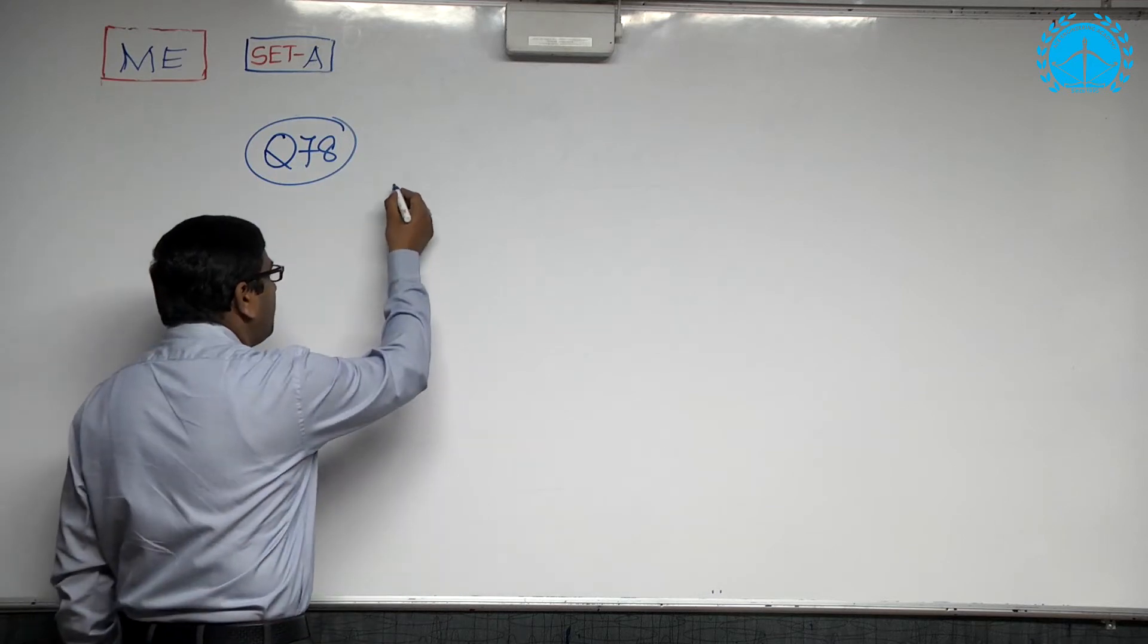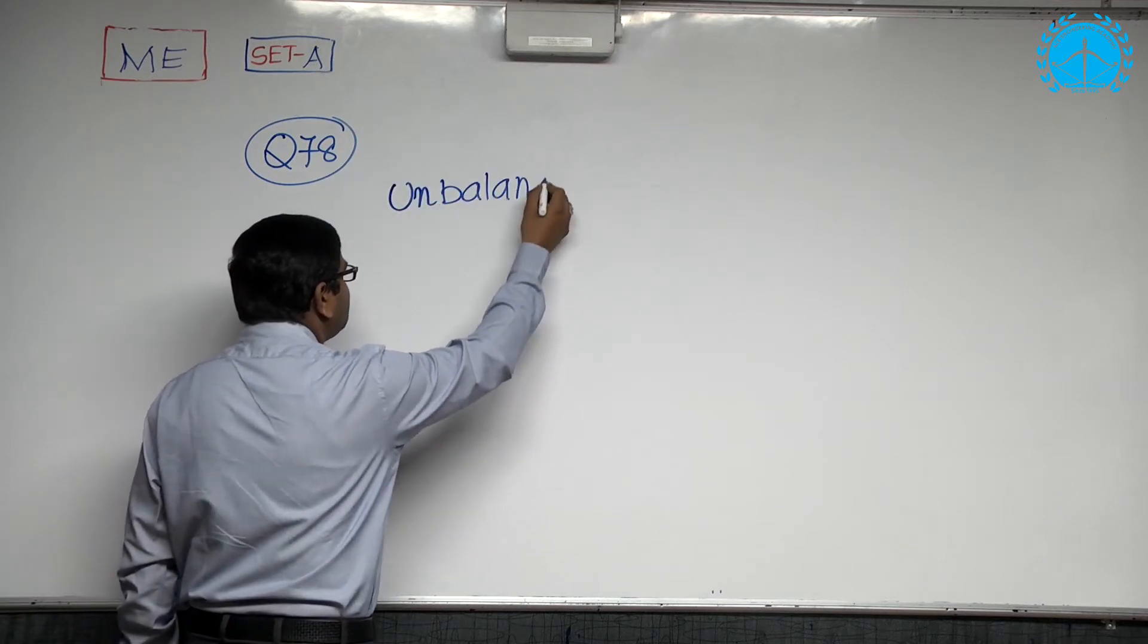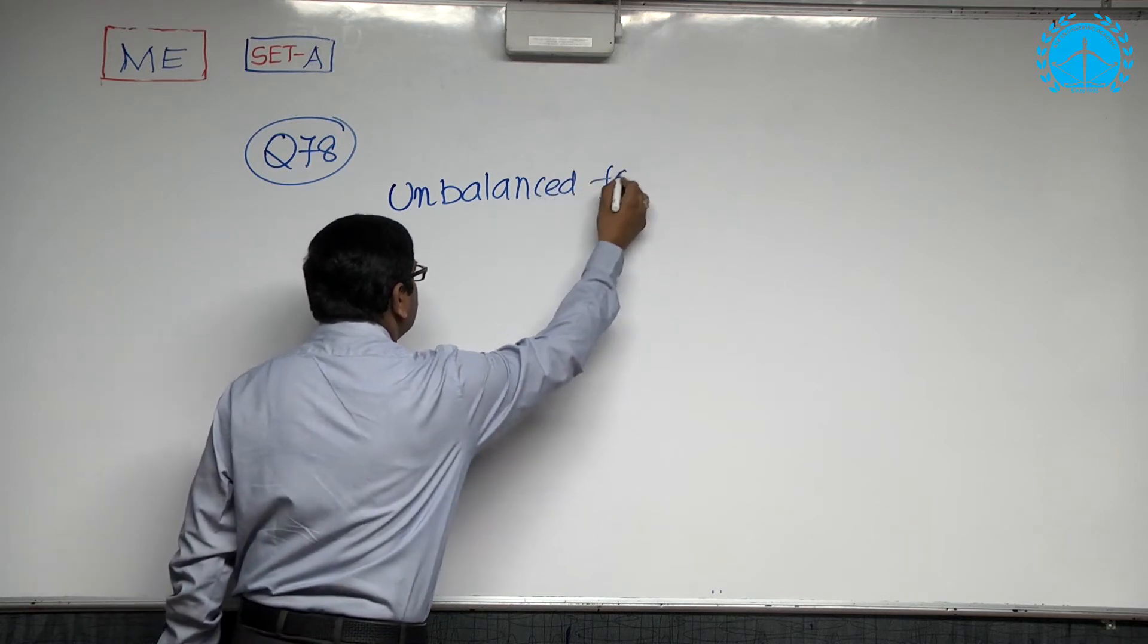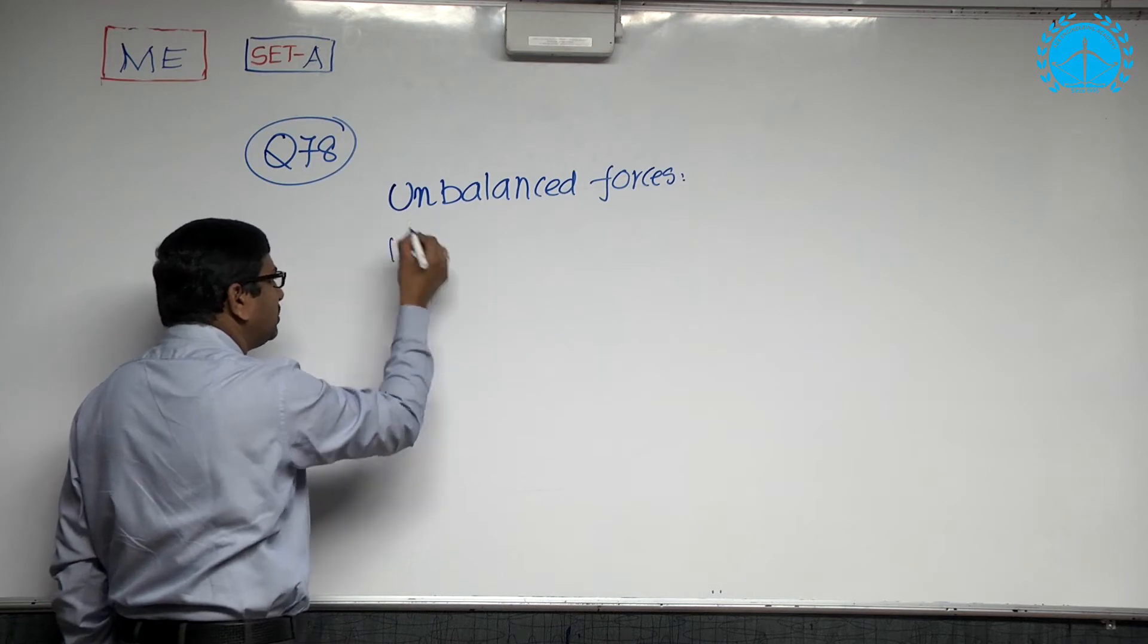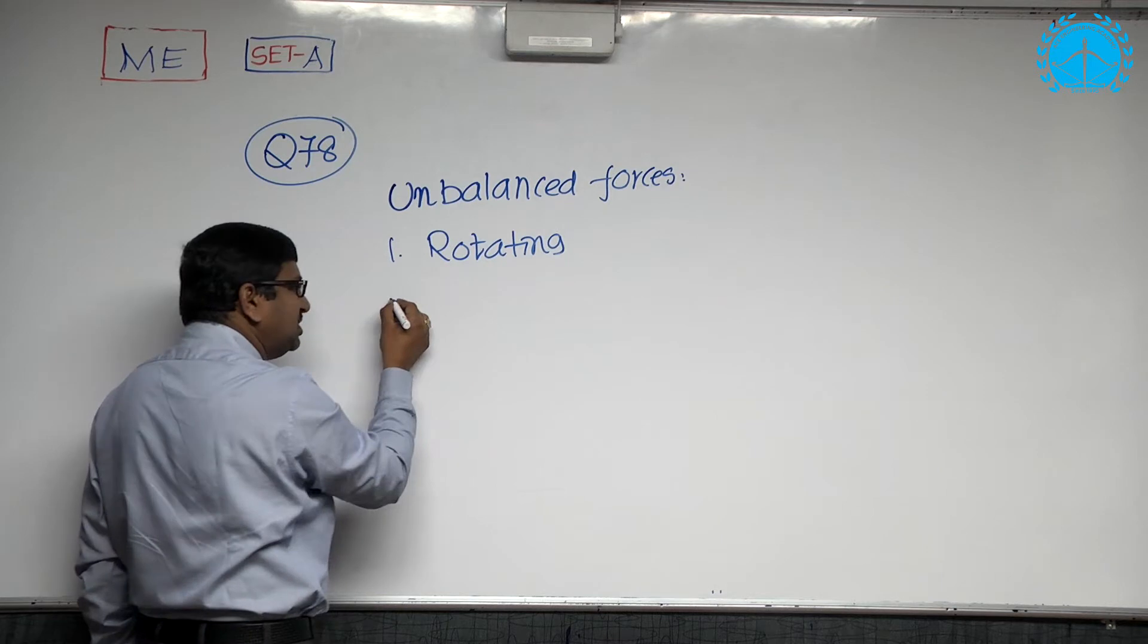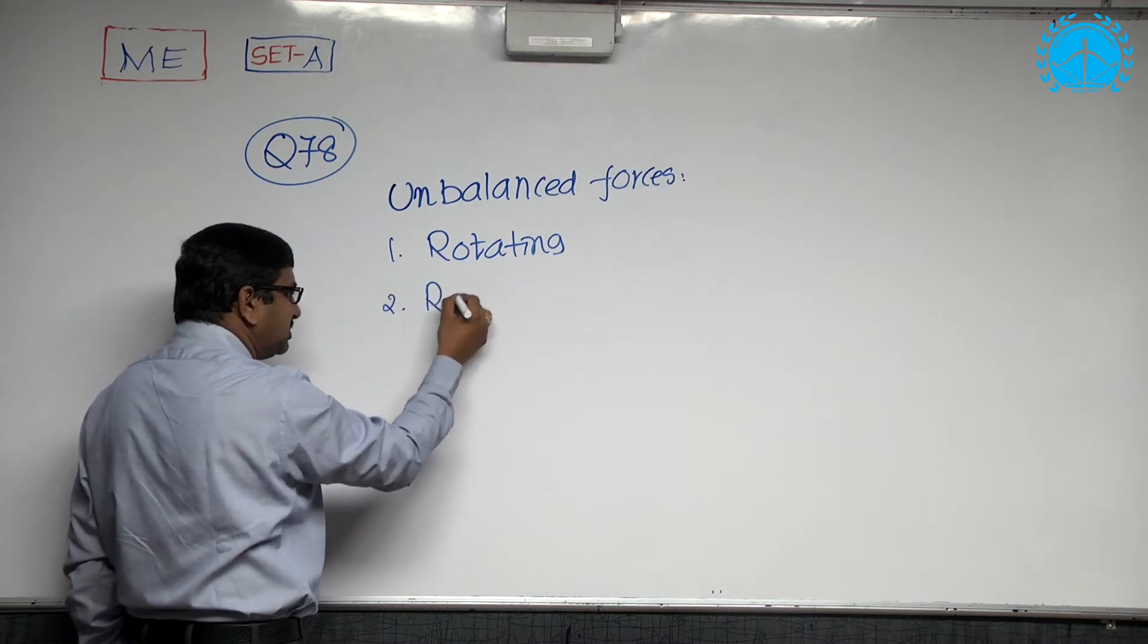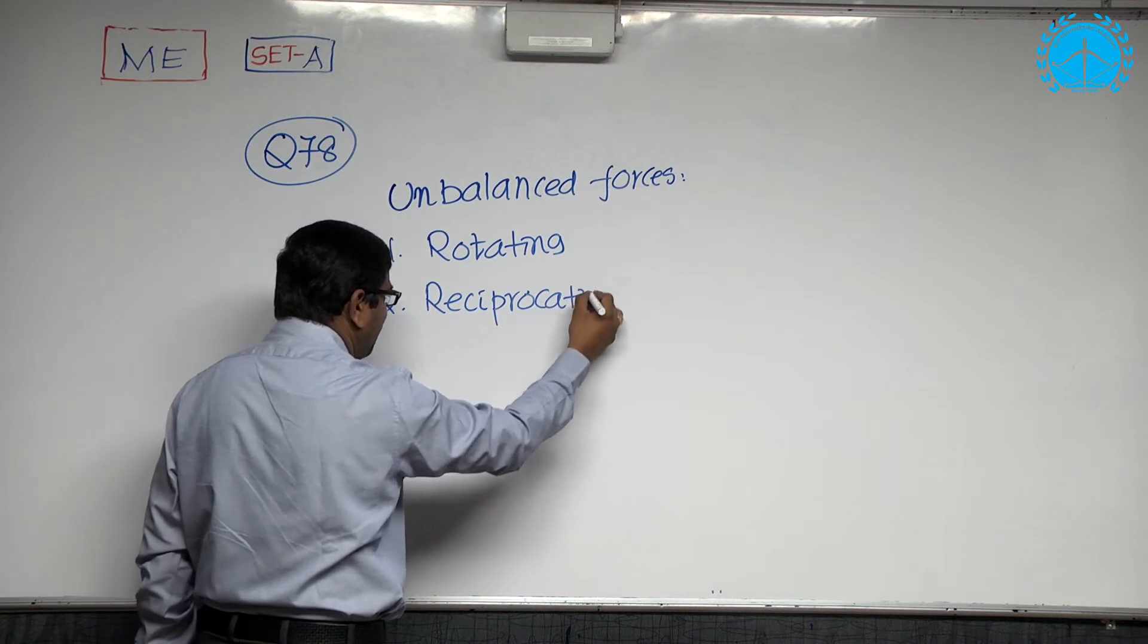When we go with unbalanced forces, it may be due to rotating unbalances or reciprocating unbalances. There are two types: one is the rotating unbalance where the mass is deviated from its axis of rotation, and the other one is reciprocating unbalances.